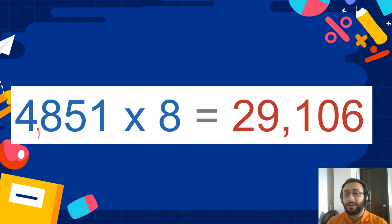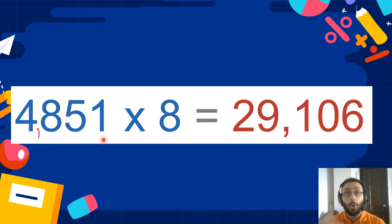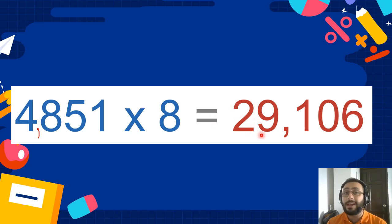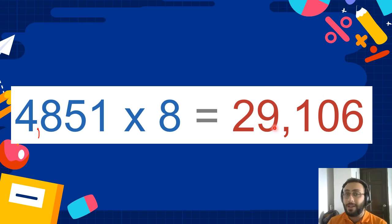I forgot — 4,851. Repeat after me. 4,851 times 8 equals 38,808. Pretty easy.